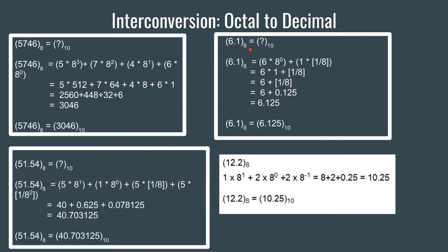Let us take a look at one more example — this one has a decimal point. The number is 6.1 octal and we want to convert it into decimal. The positional weight of 6 is 0, and the positional weight of 1, which is right after the decimal point, is minus 1. So we raise 8 to the power of minus 1, which is 1 by 8. Ultimately we get 6 plus 0.125, which is 6.125. Thus the decimal equivalent of 6.1 octal is 6.125.